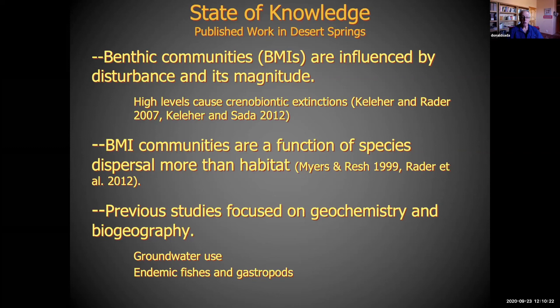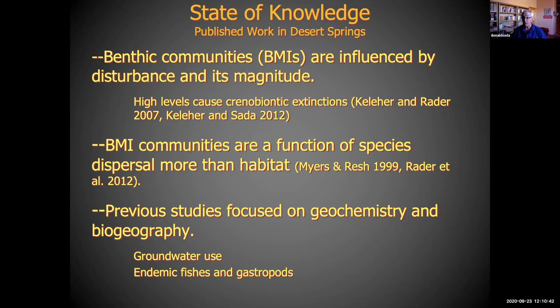Looking at published work in desert springs: there's been some work recently on benthic communities influenced by disturbance and its magnitude — this disturbance is called the number of extinctions. Some work has also found that benthic communities are a function of dispersal and habitat type. A lot of work has focused on geochemistry, and biogeography of fishes and gastropods. Most of the work on geochemistry is done for consumptive uses — looking at groundwater: how much is there and how much can we take over what time?